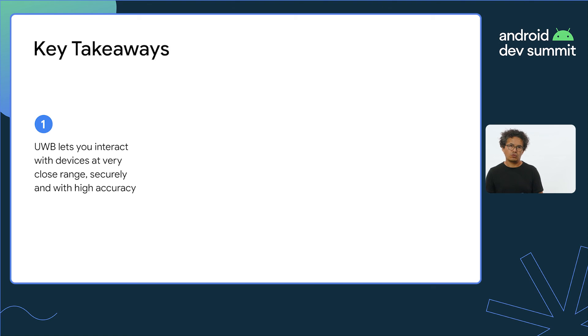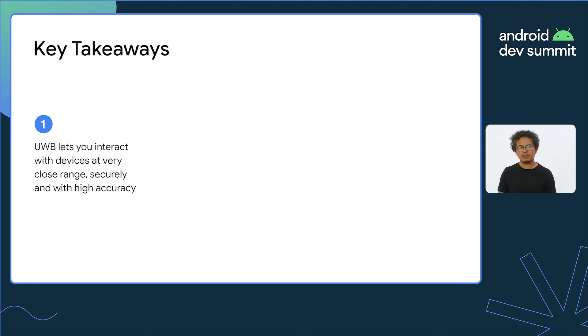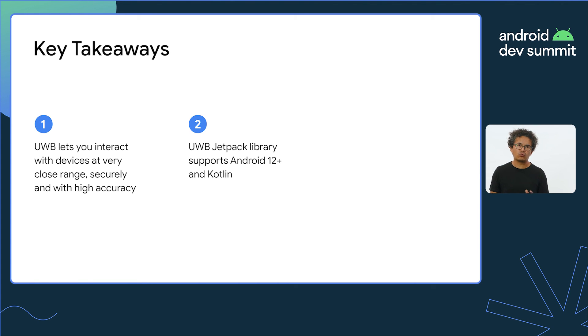That was a lot of information. But if you just want to take a few things with you today, just remember this: UWB is a very accurate and secure technology that lets you know the exact position of other capable devices at a very close range — three inches — indoors and outdoors. Our new Jetpack library empowers you to build apps for Android 12 or newer devices that support UWB. And you can make your app behave like a controller or a controlee. Check the documentation and samples provided on our developer site and let us know what you think. We cannot wait to see what you can build with UWB. Thanks.